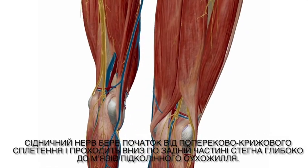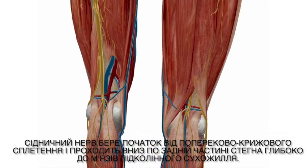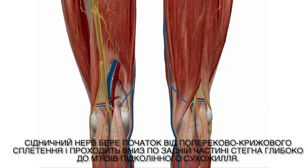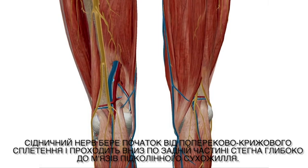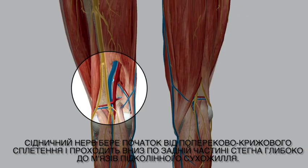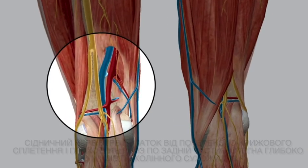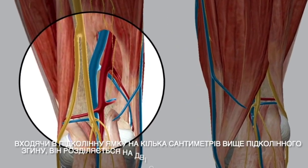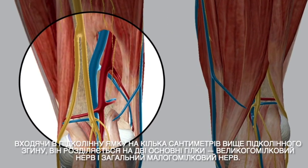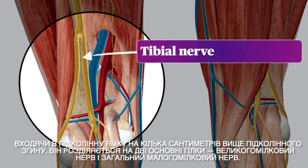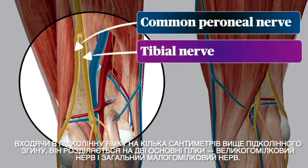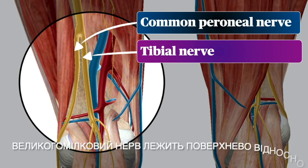The sciatic nerve originates from the lumbosacral plexus and travels down the posterior thigh deep to the hamstring muscles. As it enters the popliteal fossa several centimeters above the popliteal crease, it separates into its two principal branches: the tibial nerve and the common peroneal nerve.